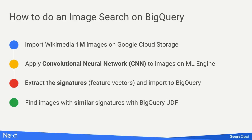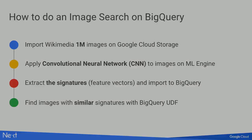This is a typical neural network design used for analyzing images. Usually people use CNN to get labels for images, such as: is it a cat? Is it a human face? Is it a flower? But instead of getting labels, we are using CNN to extract the feature vectors that serve as signatures of the images. By using BigQuery and UDF, you can do similarity search against images.